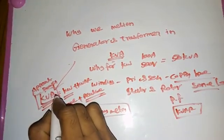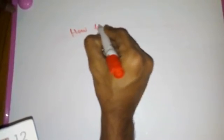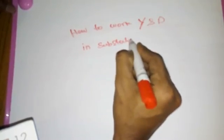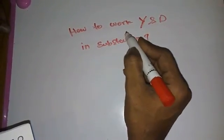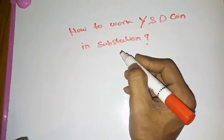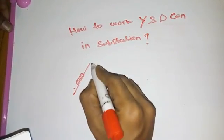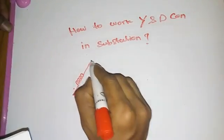Next question: how does star and delta connection work in a substation? Now first we see the connection of star-delta. I'll draw it. This is a delta connection for the secondary — R2, Y2, and B2.